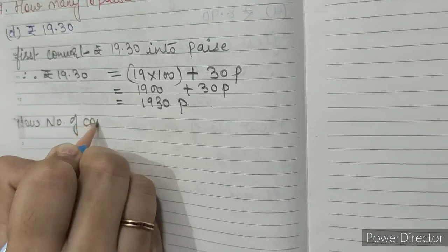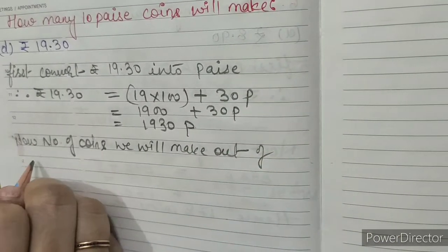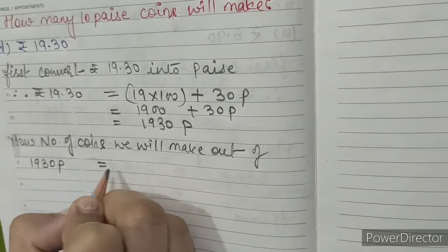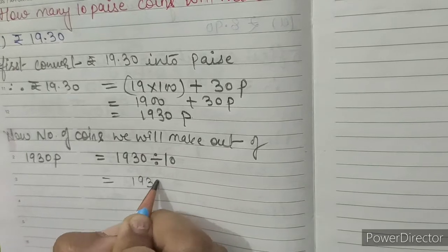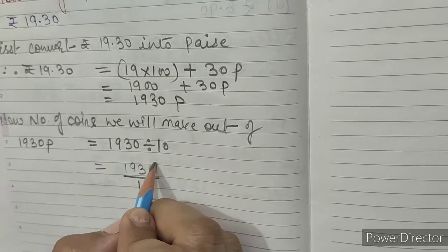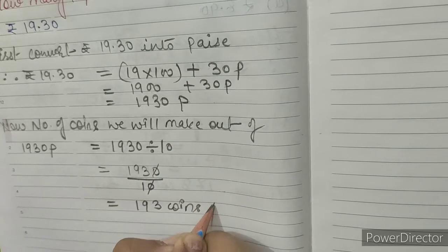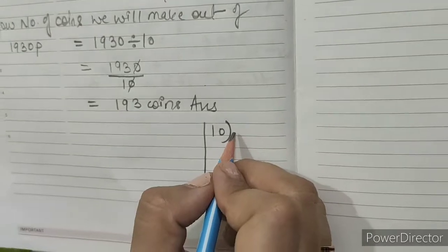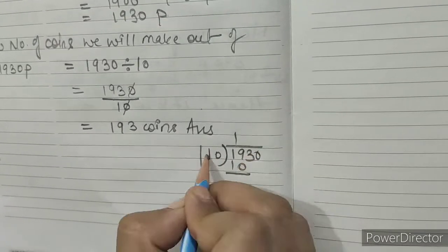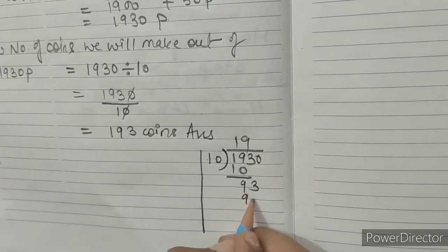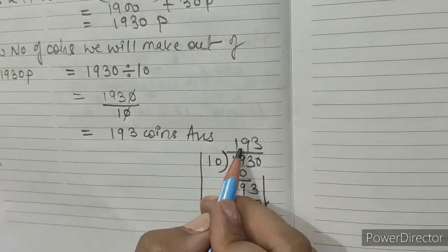Now, the number of coins we will make out of 1930 paise. We divide 1930 by 10. We cancel both the zeros, so our answer is 193 coins.